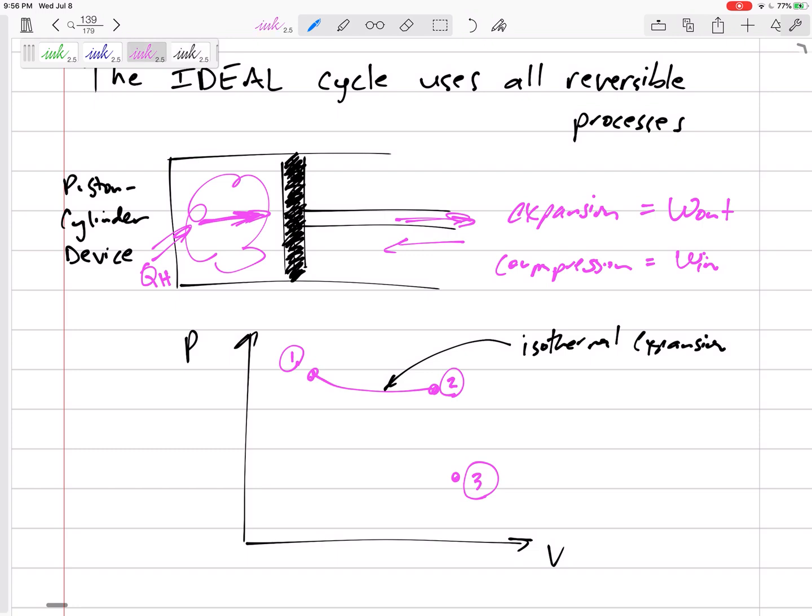And then we go from state 2 to state 3 via an adiabatic expansion. And then there we are. We are at state 3. Now, we need to get back to state 1. If we go just back the same way we went, then there will be no net work.